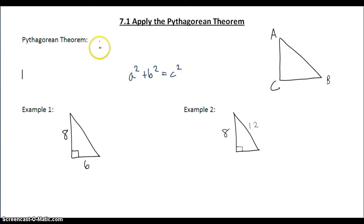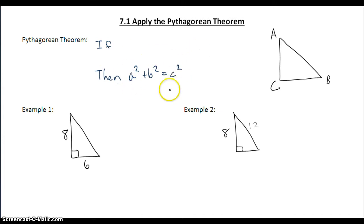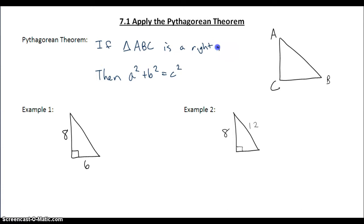A theorem is going to be an if-then statement. The if part is just as important as the then part. If triangle ABC is a right triangle, then a squared plus b squared equals c squared.